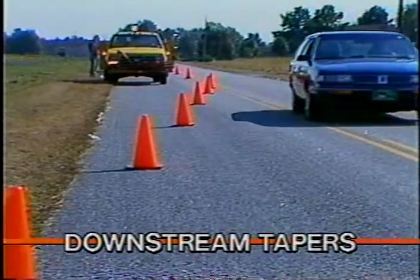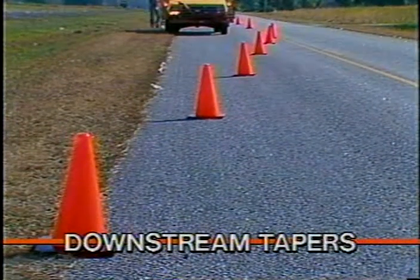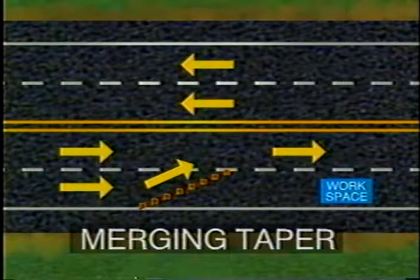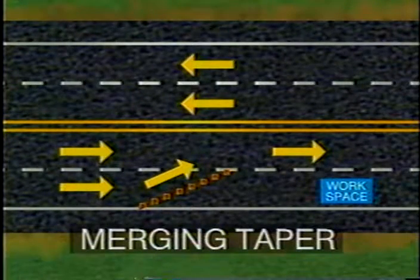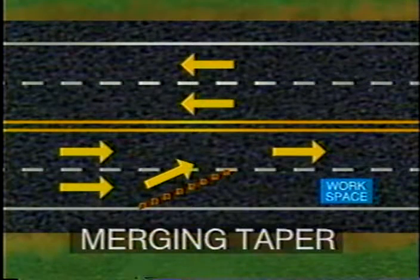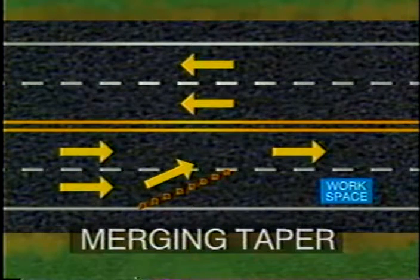Downstream tapers are those installed to allow traffic back into the normal path. The length of each type of taper is very important and is determined by several factors. The length of a merging taper, which is used to close a lane, is determined by the speed of traffic and the width of the lane to be closed. The two formulas for determining the length of tapers for lane closures are discussed in the Manual on Uniform Traffic Control Devices.